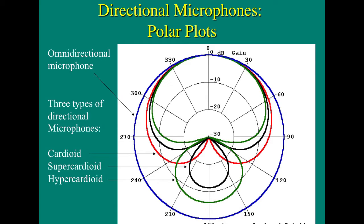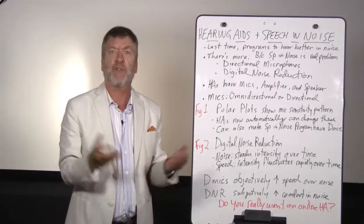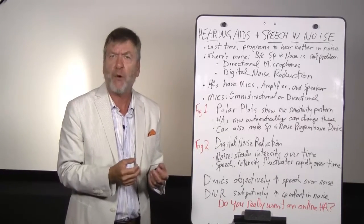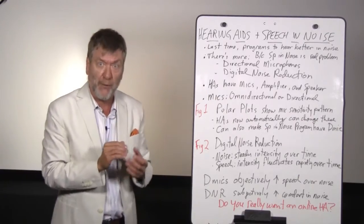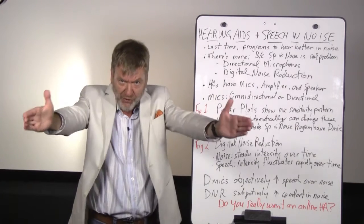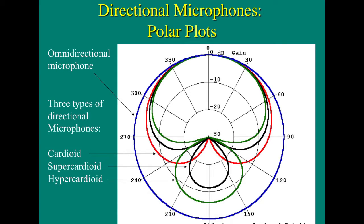The diagram in Figure 1 shows polar plots. These illustrate the sensitivity patterns of these microphones. The omnidirectional mic is shown by the round outside circle, showing you that that microphone is equally sensitive to sounds in all directions. Omnidirectional microphones are great for listening in quiet, but what about if there's background noise? Then you'd want a directional microphone, because you'd want the microphone to be most sensitive in the direction of the person you're facing.